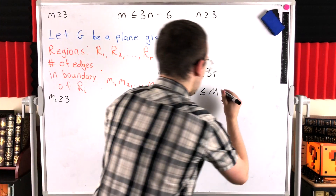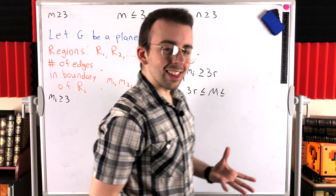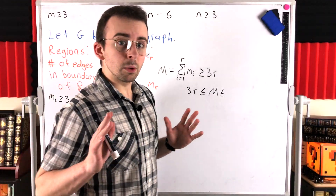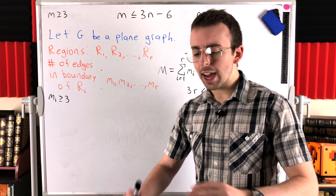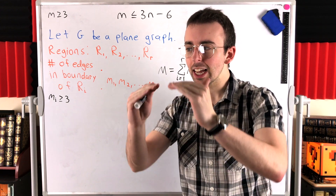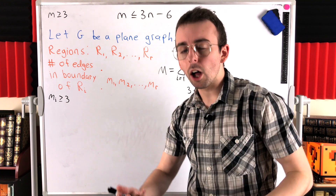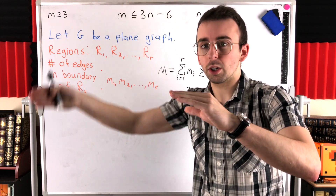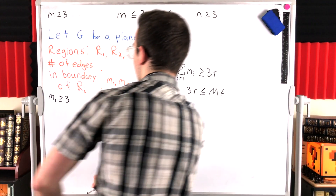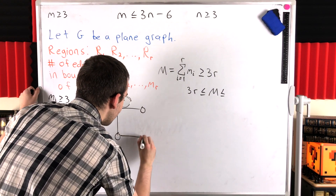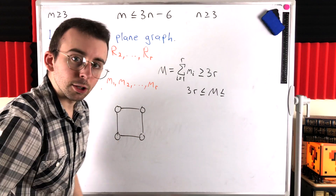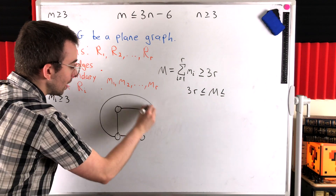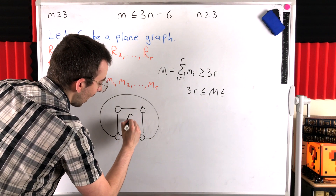Now can we bound M from above? We need to think about how many times each edge of the graph is counted in this sum. If an edge lies on a cycle, it's part of the curve enclosing a region, so it will be counted in the boundary of that enclosed region and also in the boundary of the region outside it — which could be the exterior region or some other enclosed region. So if an edge lies on a cycle, it gets counted twice.